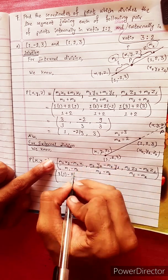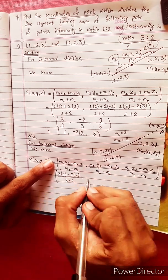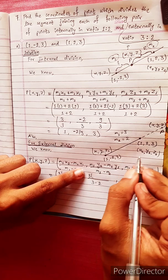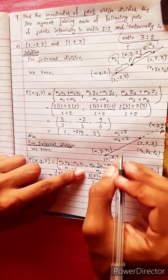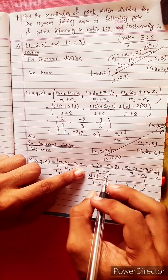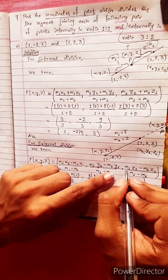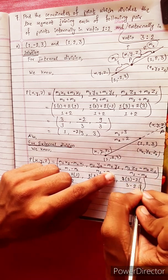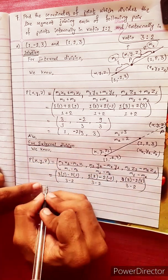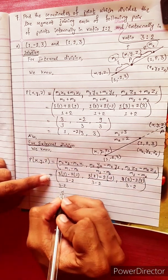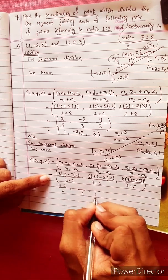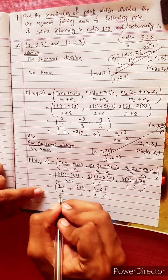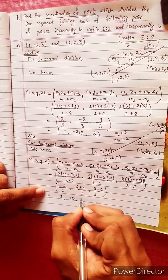Substituting: m1·x2 minus m2·x1, divided by m1 minus m2; z2 times 3 minus m2·z1 times 3; then 3 minus 2 divided by 3 minus 2 equals 1. Result: 6 minus (minus) plus 3 minus 6, giving the answer 1, 10, 3.